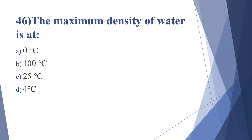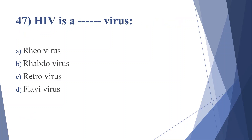Forty-sixth question: the maximum density of water is at — option A: 0°C, option B: 100°C, option C: 25°C, option D: 4°C. Answer is option D, 4°C.